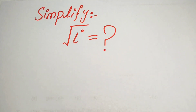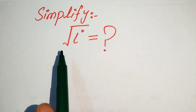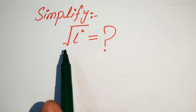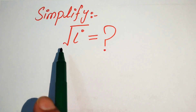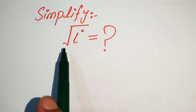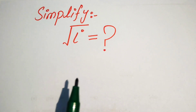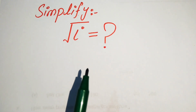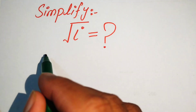Hello everyone, welcome to my channel. In this question we will simplify this radical term which has iota inside its square root.